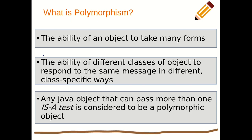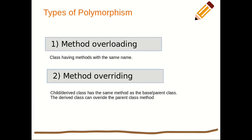We have different ways for implementing polymorphism. One, we can implement polymorphism through the use of method overloading — this is where we have a class having different methods but all these methods carry the same name. Two, we can implement polymorphism through method overriding.